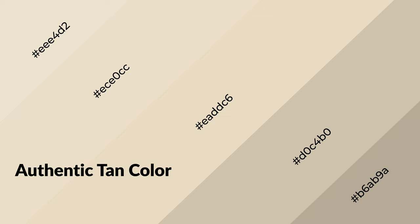To generate shades of a color, we add black to the color, and it is used in patterns, 3D effects, and layers. Shades create depth and drama. Authentic tan is a warm color and it emits cozier and active emotions.